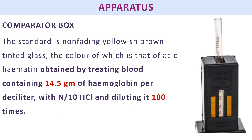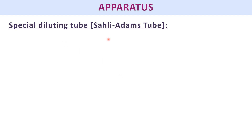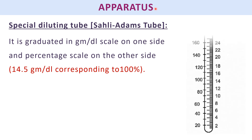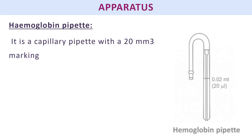The next important apparatus is the Sahli-Adam tube, or special diluting tube. It has graduations in two units: a percentage scale and a gram-per-deciliter scale. 100% on this scale corresponds to 14.5 g/dL — so when drawing the tube, 14.5 g/dL must correspond to 100%. The hemoglobin pipette has a marking at 20 mm³ (20.02 mL).